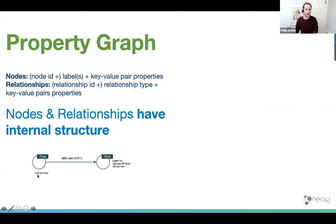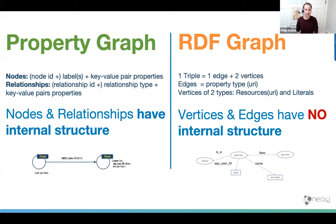One important difference is that nodes and relationships inside a property graph have internal structure — a relationship not only has a type and direction, but can have one or more properties, which are named value pairs where a value can be a map or an array. Nodes can also have properties as well as labels. Inside RDF there's no internal structure, so effectively everything gets blown out into relationships — Philip is connected to his hair color, his eye color, his date of birth.